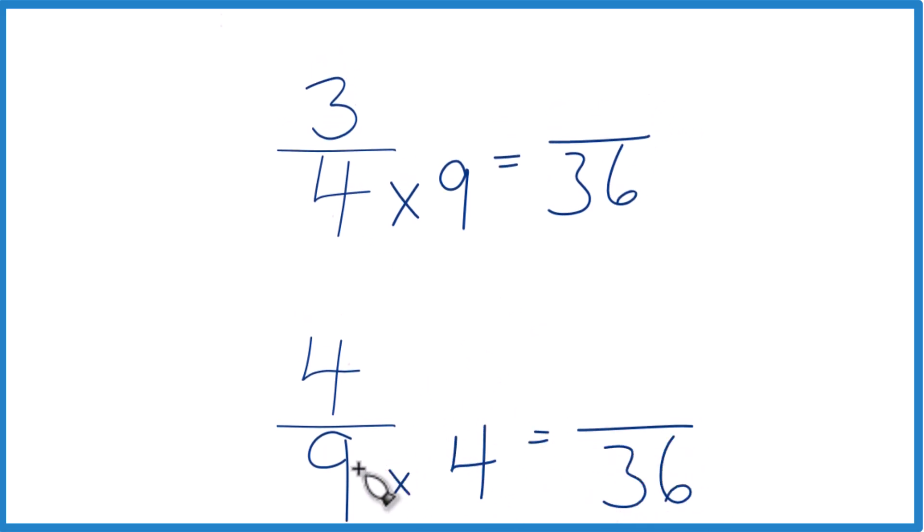But we can't just multiply 9 times 4, the denominator down here. We need to multiply the numerator too. That's because 4 over 4, that's just 1. So we're multiplying by 1.